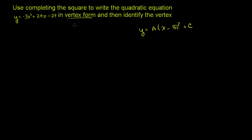So let's try to manipulate this equation to get it into that form. The first thing that immediately jumps out at me is that all of these numbers are divisible by negative 3. And I just always find it easier to manipulate an equation if I have a 1 coefficient out in front of the x squared. So let's just factor out a negative 3 right from the get-go. So we can rewrite this as y equals negative 3 times (x squared minus 8x plus 9). And let me write the positive 9 out here. And you're going to see in a second why I'm doing that.